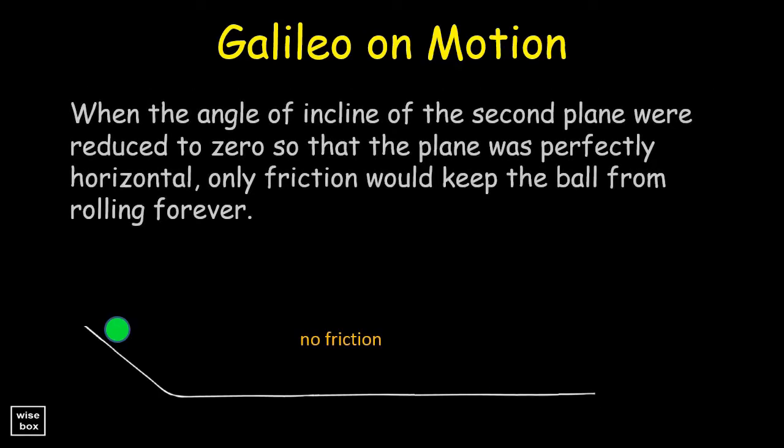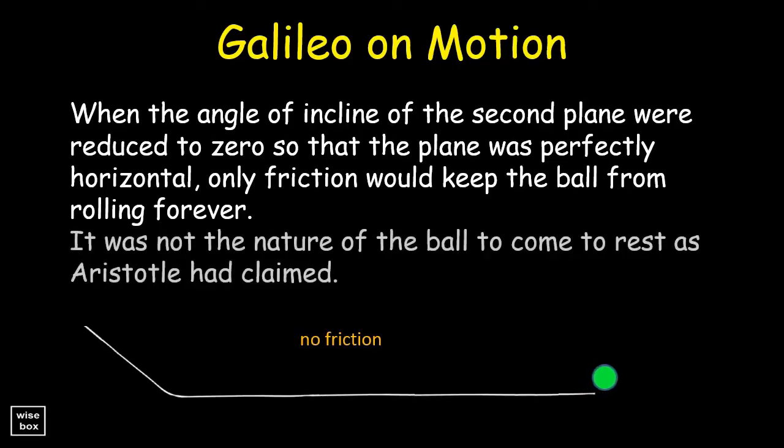But Galileo insisted that if there is no friction, the ball will never stop. When the angle of incline of the second plane were reduced to zero, so that the plane was perfectly horizontal, only friction would keep the ball from rolling forever. It was not the nature of the ball to come to rest, as Aristotle had claimed.